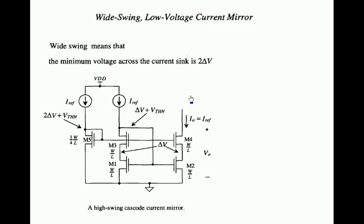Today we'll discuss the wide swing low voltage current mirror. It should be used for low voltage and should have a wide swing output signal. The meaning of wide swing is that whenever the voltage across the current sink is 2 delta V, and if it is performing its mirroring operation at that time, the minimum voltage across the current sink is two times delta V.